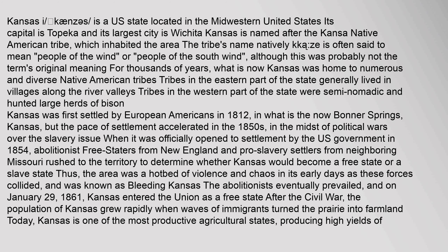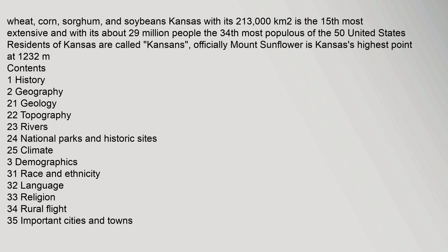After the Civil War, the population of Kansas grew rapidly when waves of immigrants turned the prairie into farmland. Today Kansas is one of the most productive agricultural states, producing high yields of wheat, corn, sorghum, and soybeans.